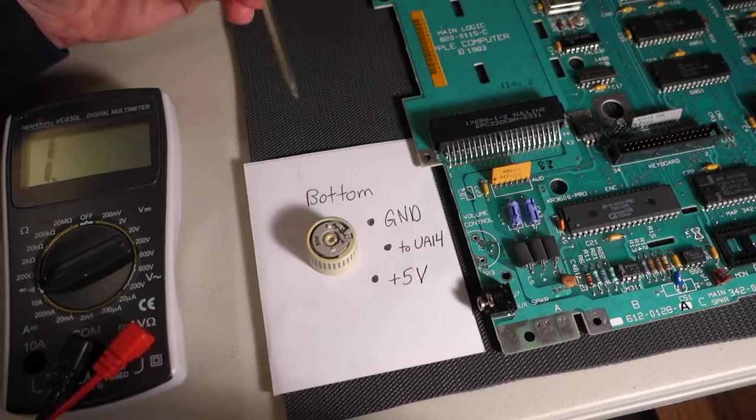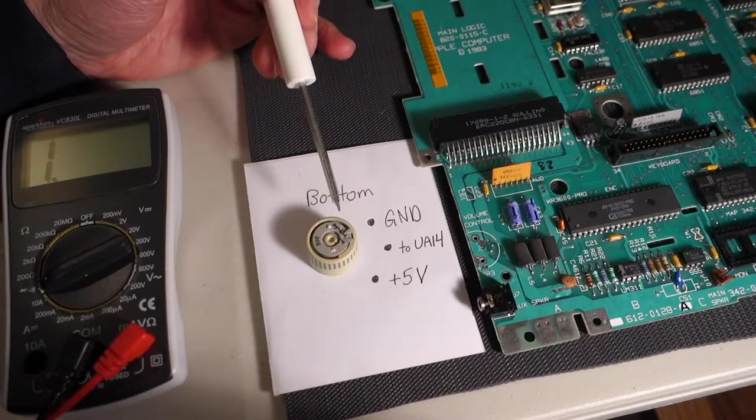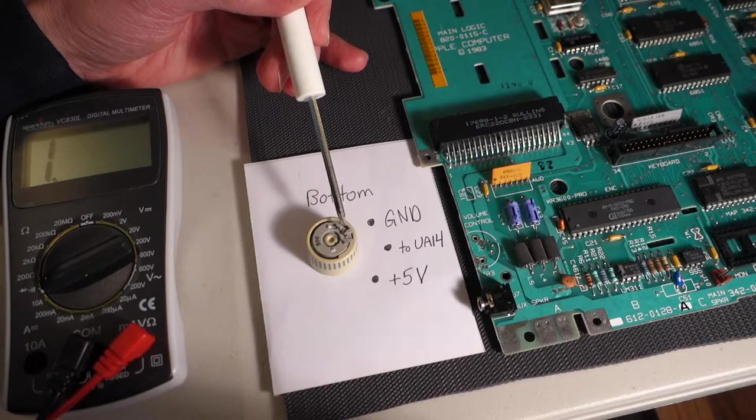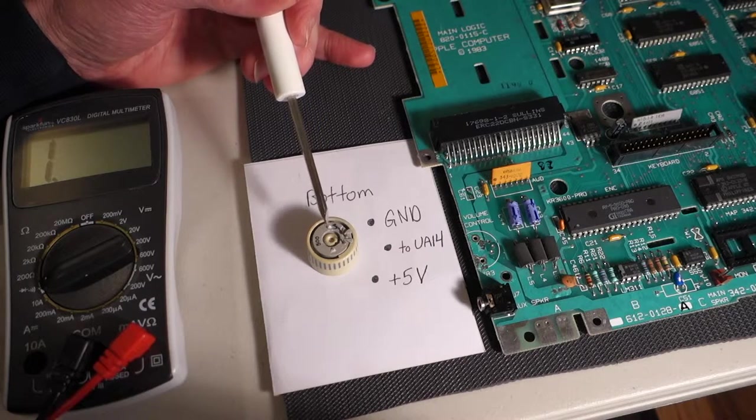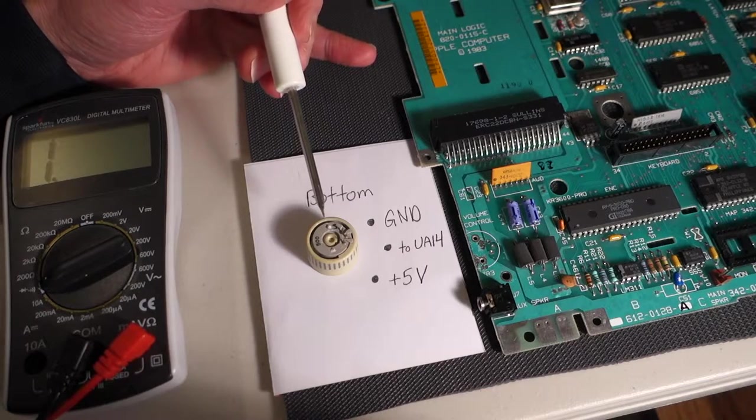So to get the volume control out what I did is I just removed all the solder using both the solder sucker and the wire braid from the opposite side of the board.